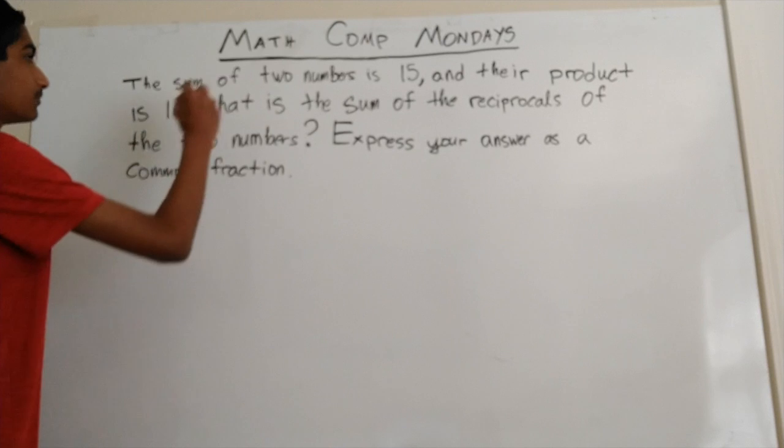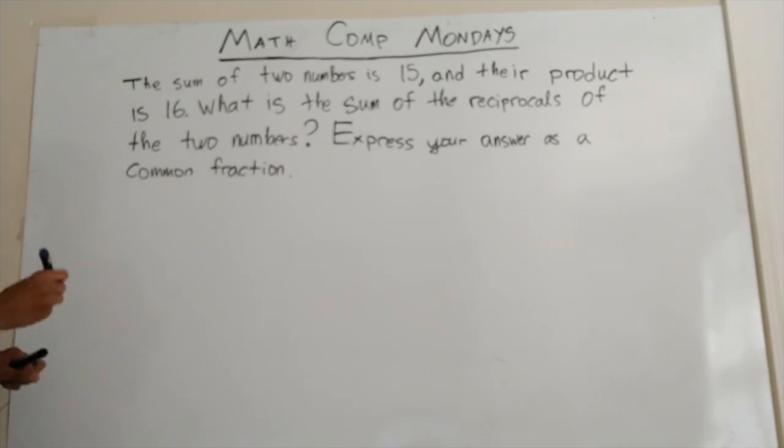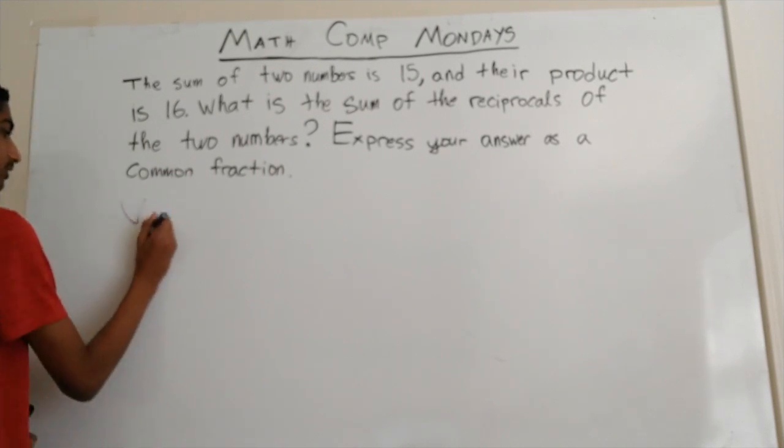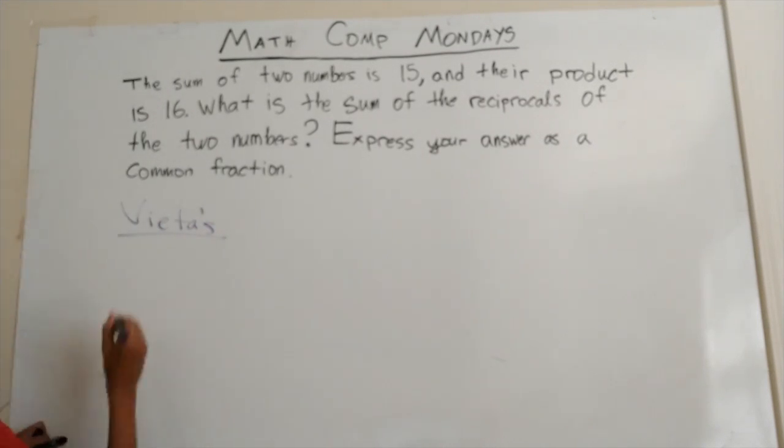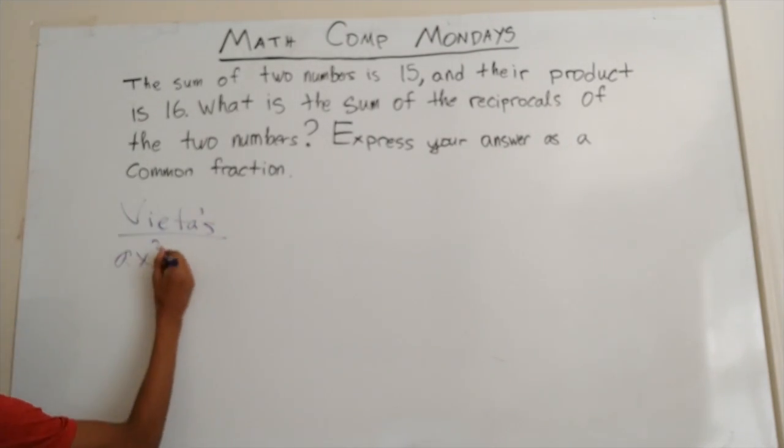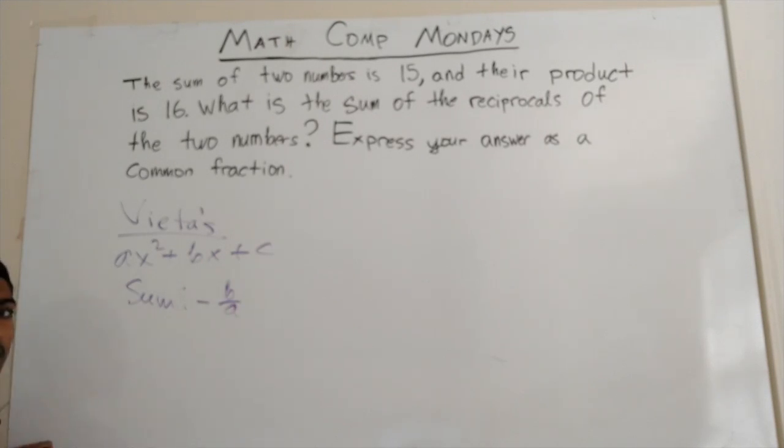So we have the sum of two numbers is 15 and their product is 16. Whenever you see something like this in more complicated math competitions, what we do is we use Vieta's formulas. Basically that says in a quadratic ax squared plus bx plus c, the sum of the roots is negative b over a, and the product of the roots is just c over a.